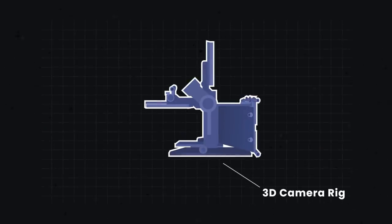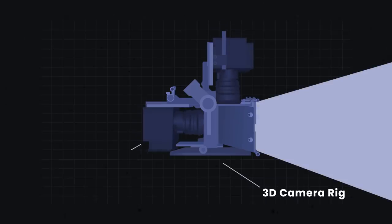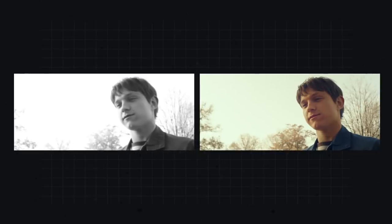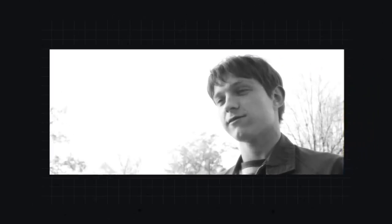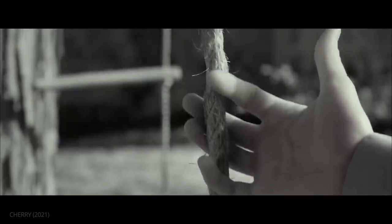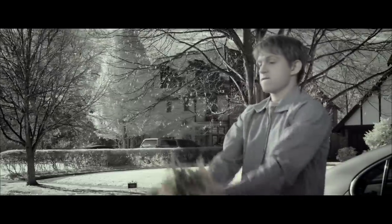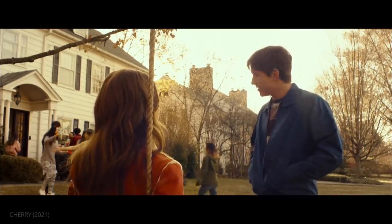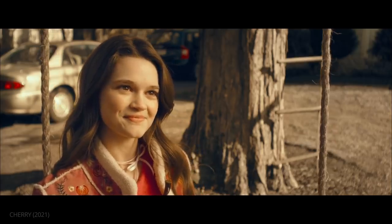We used a 3D rig with two cameras: one was a normal color camera and the second was set up for infrared. These two images were the exact same composition and frame — one infrared, one normal color. Our two cameras were lined up to create the exact same frame. By choosing shot to shot how much of the infrared and how much of the color you used, you could change the tonality of the image. There was a lot of discussion about how much to use it and how long — as always, less is more.